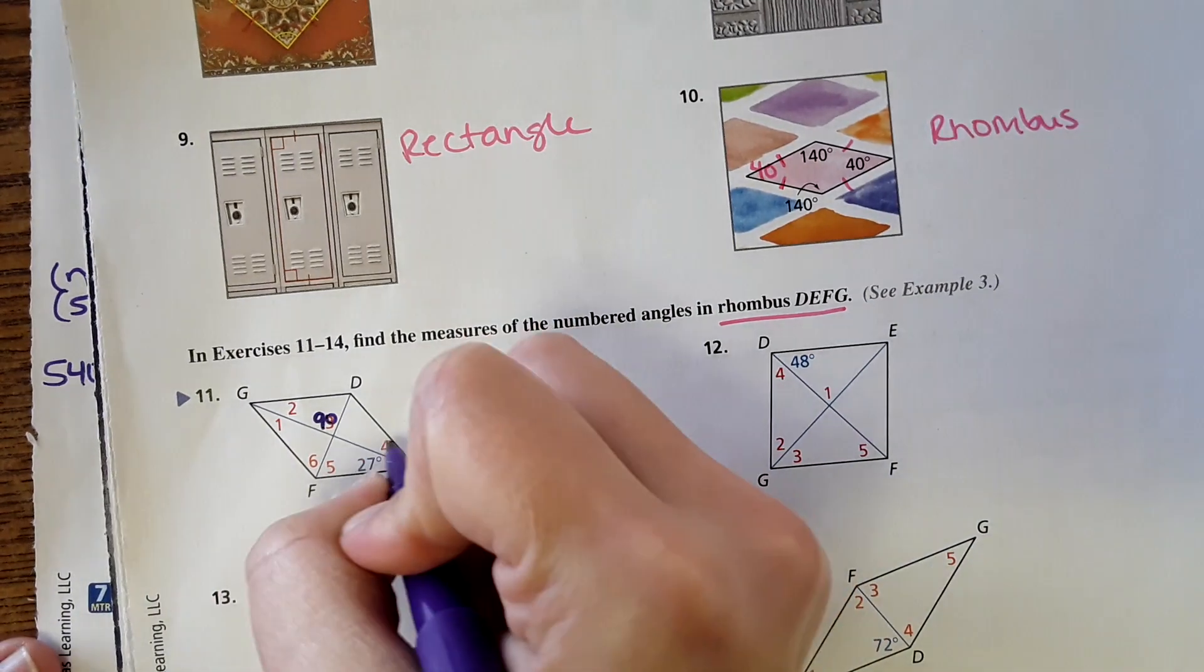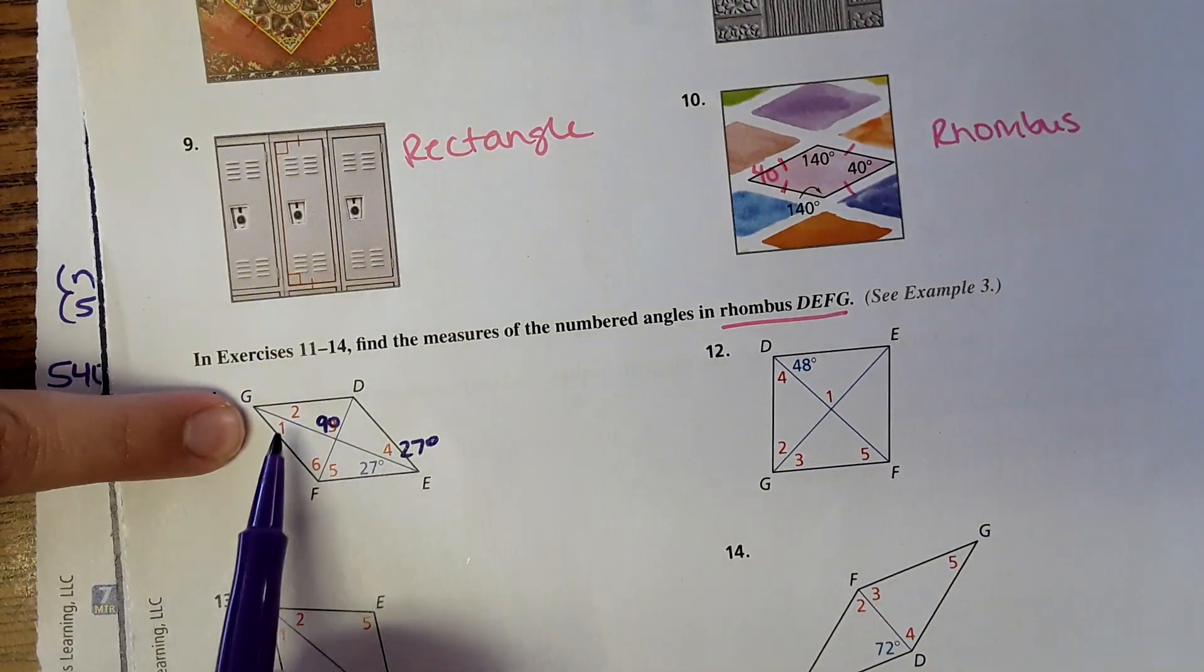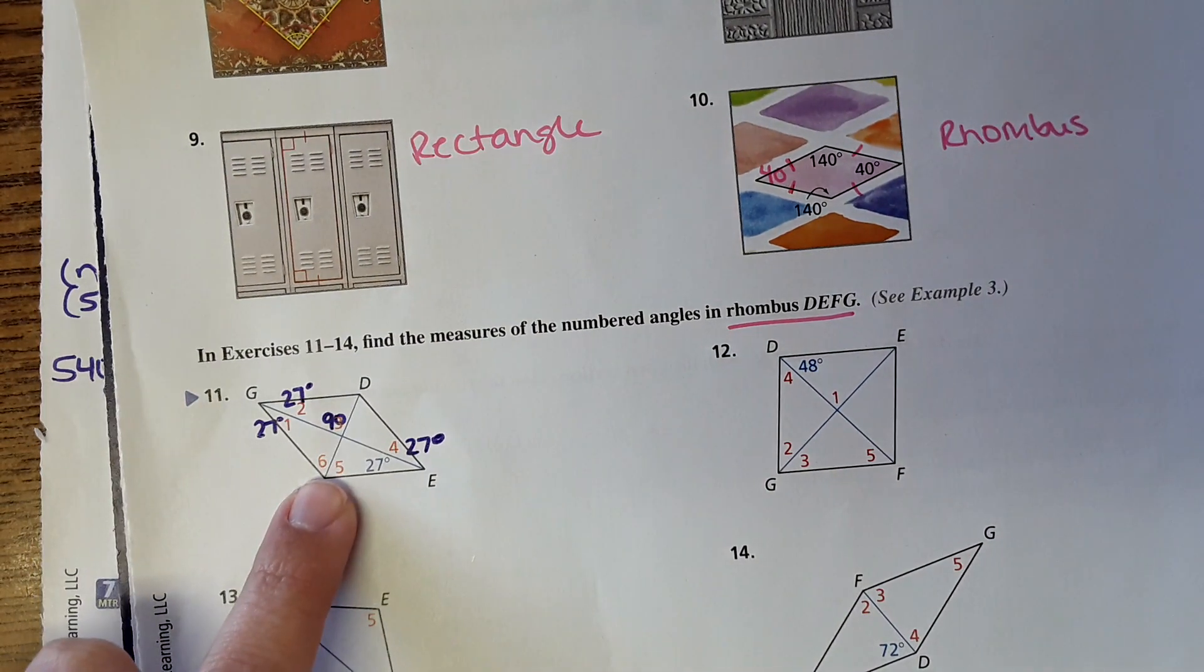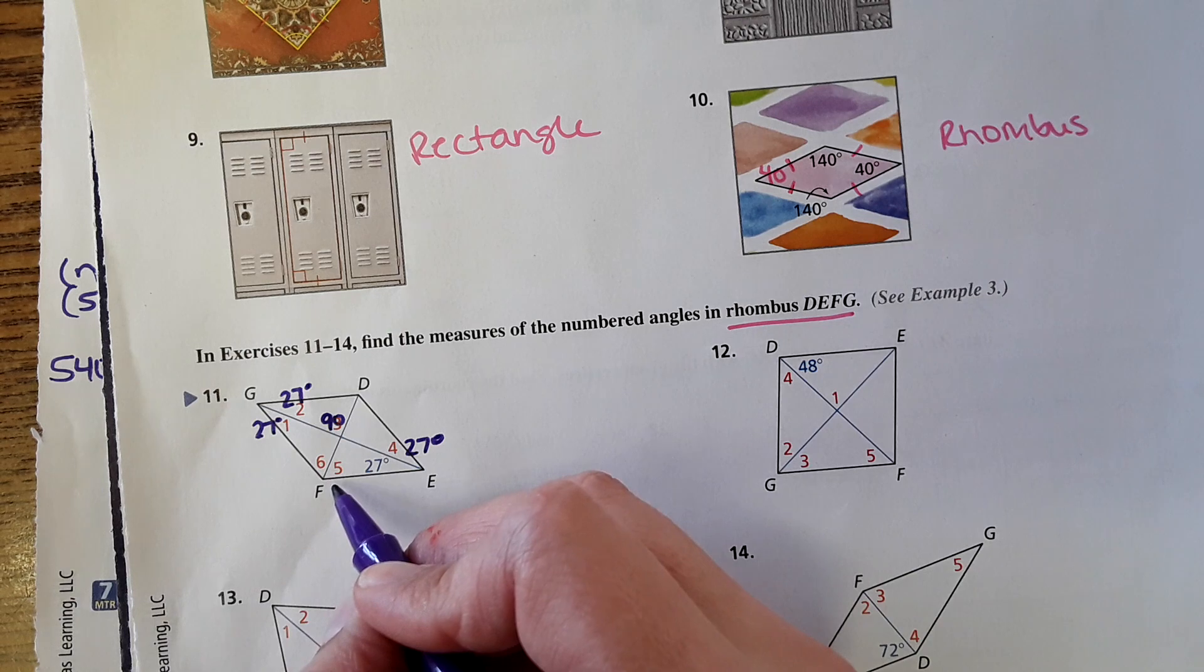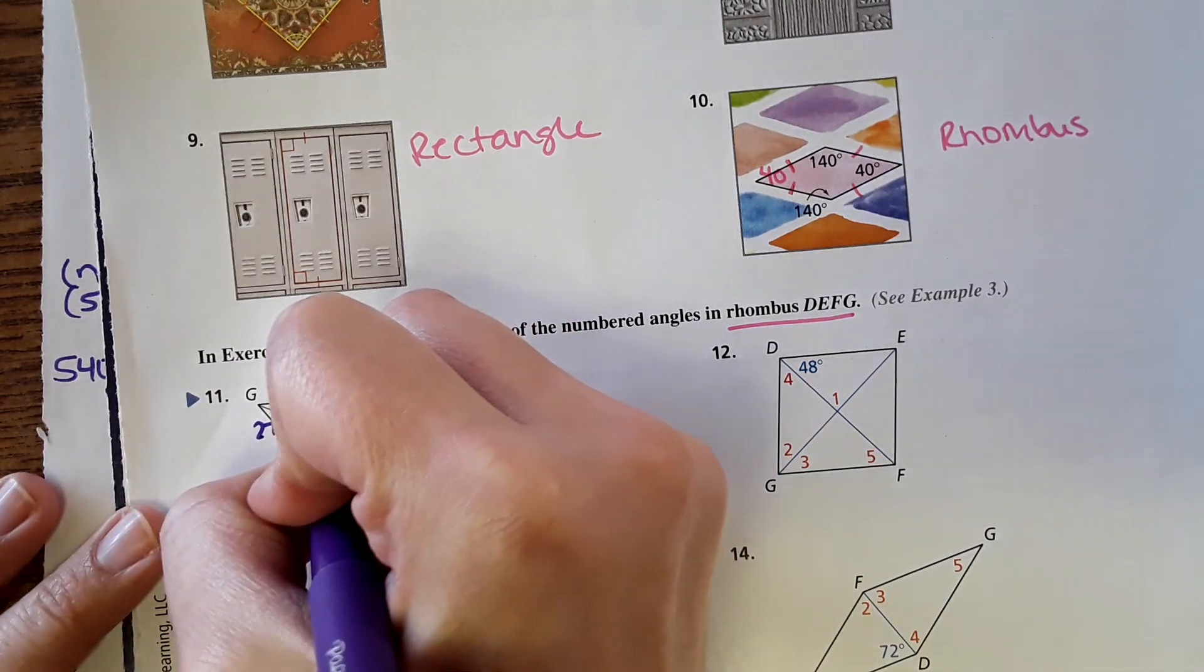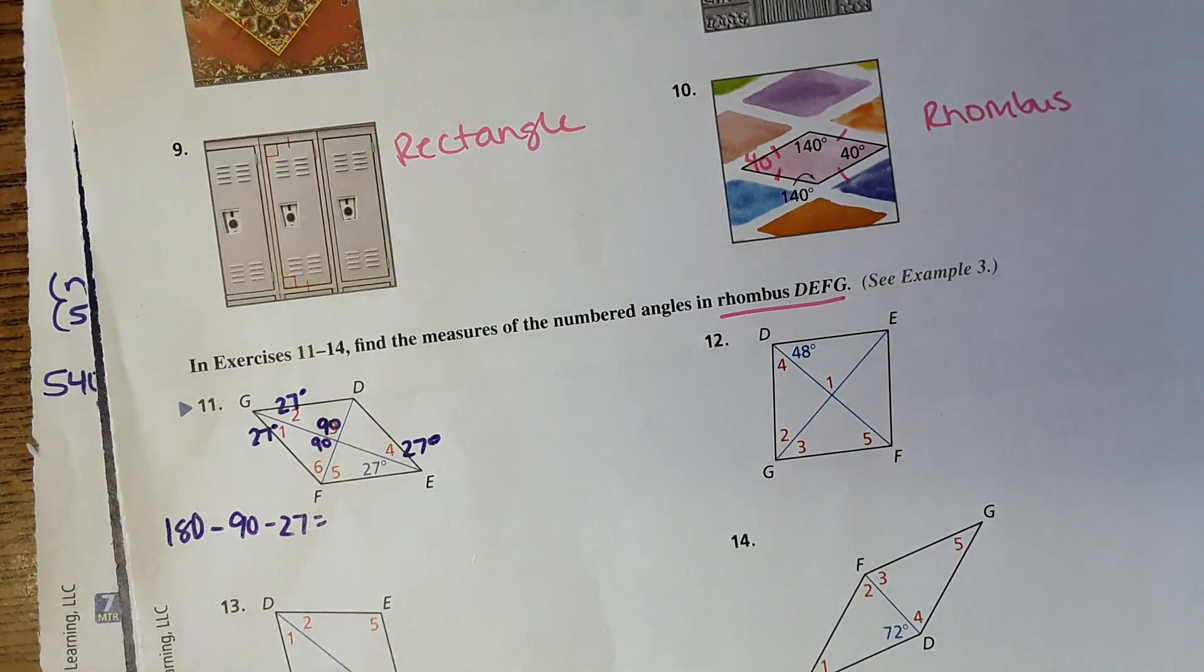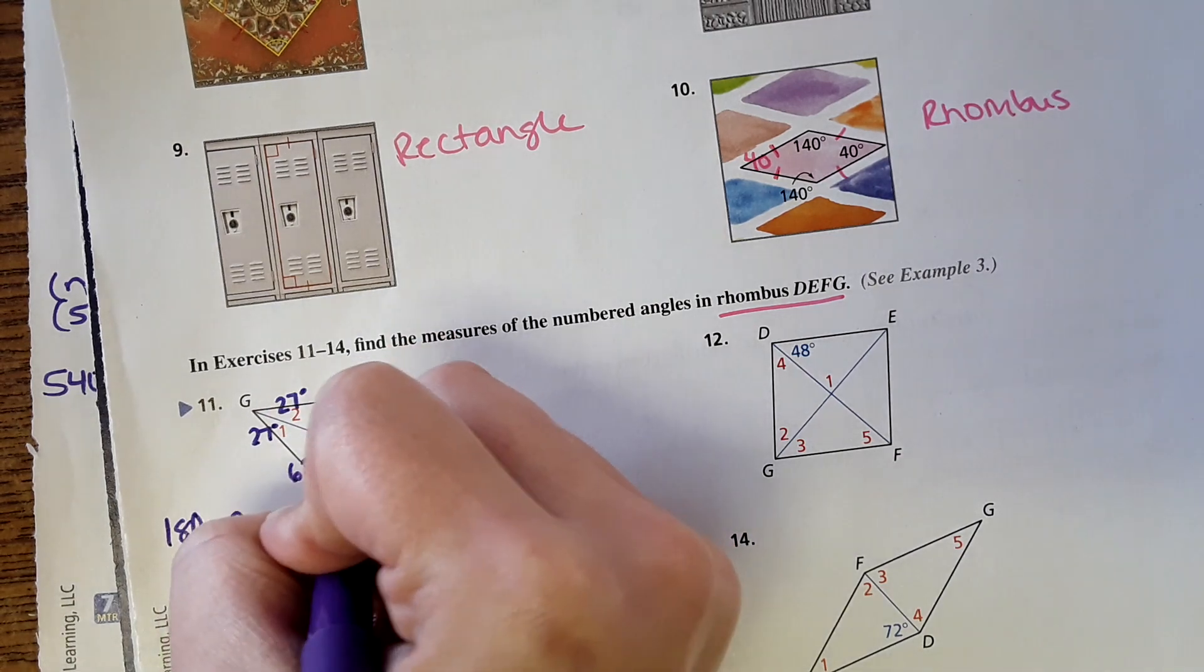Also, the diagonals bisect the angle. So if this is 27, then this is 27 degrees. It's a parallelogram where opposite angles are equal. So that means that this would also have to be 27 degrees and 27 degrees. Now we're left with 5 and 6. You could use the triangles to figure out that missing angle. You could also use the fact that consecutive angles are supplementary. I might just use a triangle. Like the three angles here have to add to 180. So I could do 180 minus 90 minus 27. And it comes out to 63. So this would be 63 degrees.